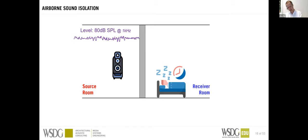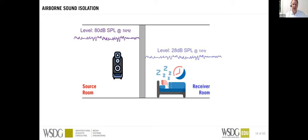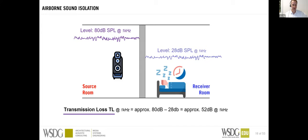We go to the receiver room and measure a level of 28 dB at 1 kHz. We can now define the transmission loss value, or TL, at 1 kHz — it's frequency dependent. In this case, transmission loss is approximately 80 dB minus 28 dB, which is 52 dB at 1 kHz. This is the TL of the wall between the receiver room and the source room.